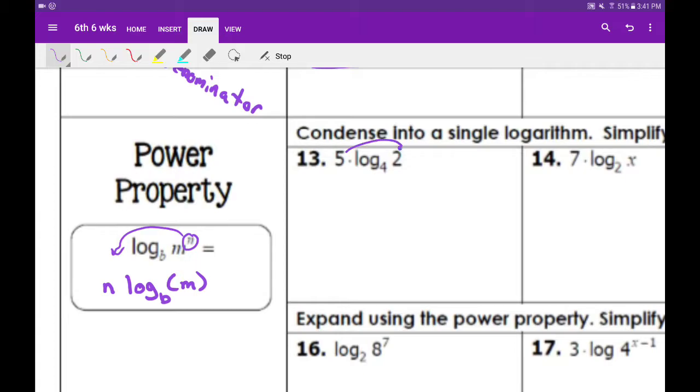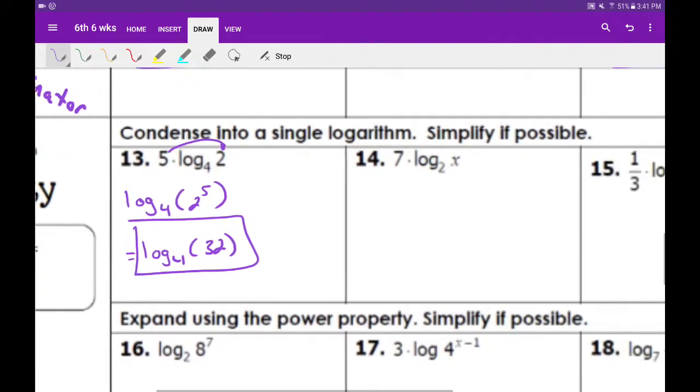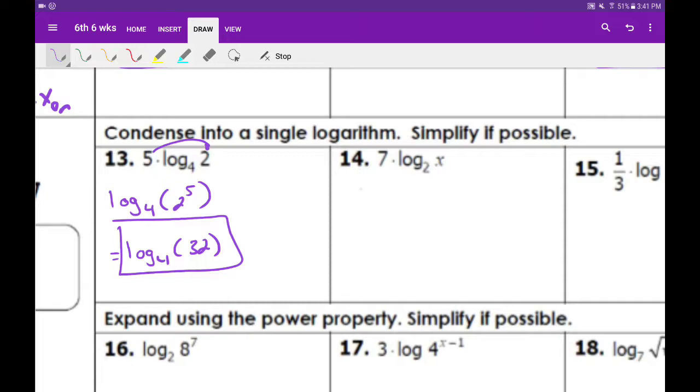So problem 13, we're going to condense this one. Very simple, take the 5 and put it up here. We get log base 4 of 2 to the 5th power, and then we can simplify that and that'd be log base 4 of 32.